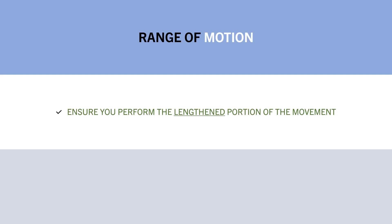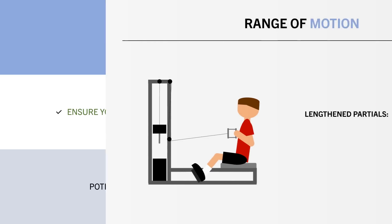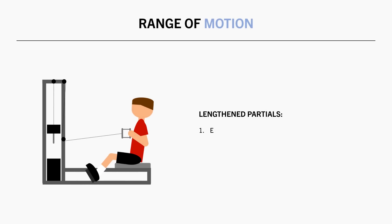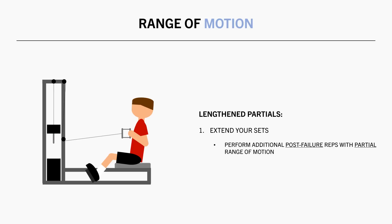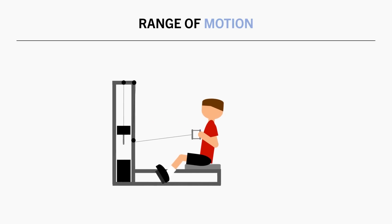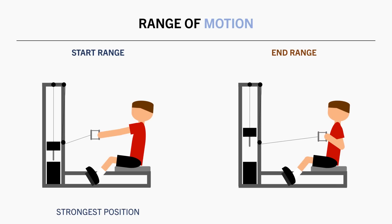In some cases, it might be worth experimenting with lengthened partials — reps only in the lengthened range of the exercise. The first and probably most relevant method is to use lengthened partials to extend a set: once you have reached failure or close to it, you can usually perform a few additional reps with partial range of motion. For example, a seated cable row is easiest in the initial part when the back muscles are most lengthened, and hardest in the end range when most shortened. So once we hit failure with full range of motion, we can continue the set by performing additional partial reps in the lengthened position.